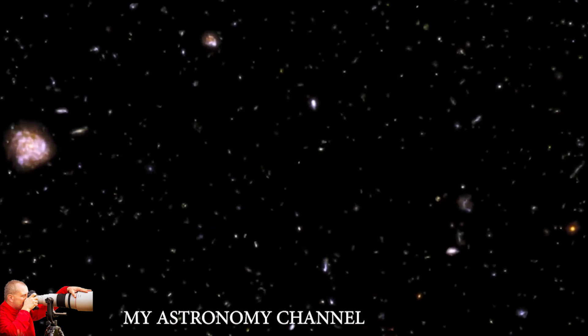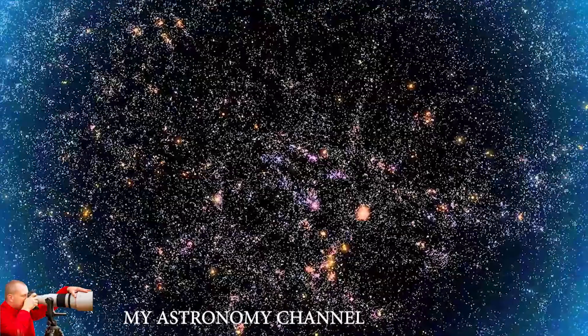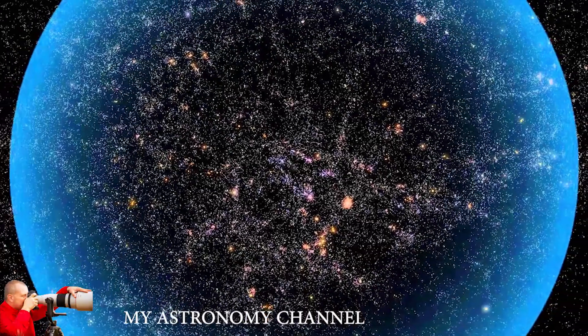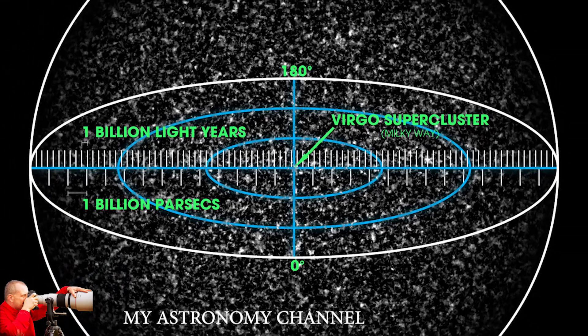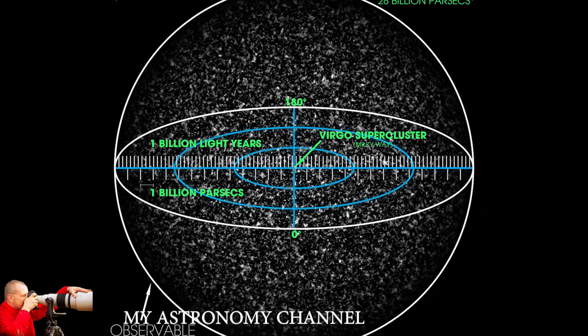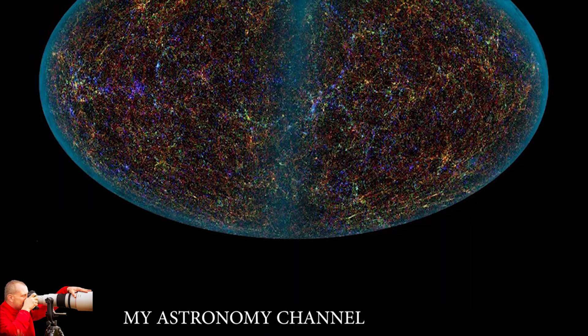The word observable is key. The sphere limits what scientists can see but not what is there. But though the sphere appears almost 28 billion light-years in diameter, it is far larger.